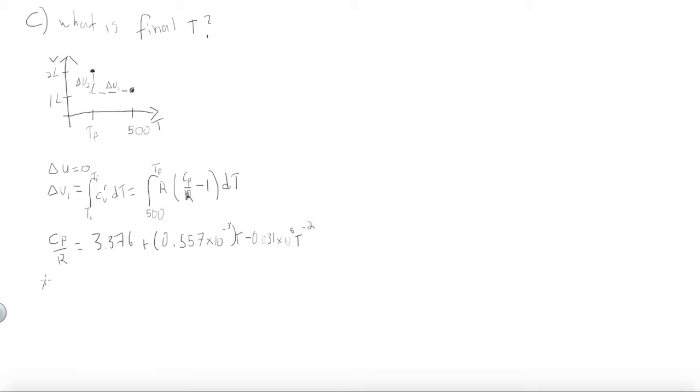Plugging this into the integral, we get that ΔU1 is equal to 19.75 times t, plus 2.31 times 10 to the negative 3 times t squared, plus 25,770.3 divided by t, minus 10,506.770.